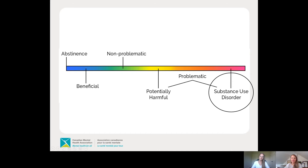As we move to scenario four, where this could be problematic and potentially a substance use disorder: someone here is drinking often, including by themselves. They're spending too much money on alcohol, missing a lot of work, and have alienated important friends and family. Perhaps they're also using alcohol in risky ways like drinking and driving. This is a serious problem with serious consequences because of drinking.